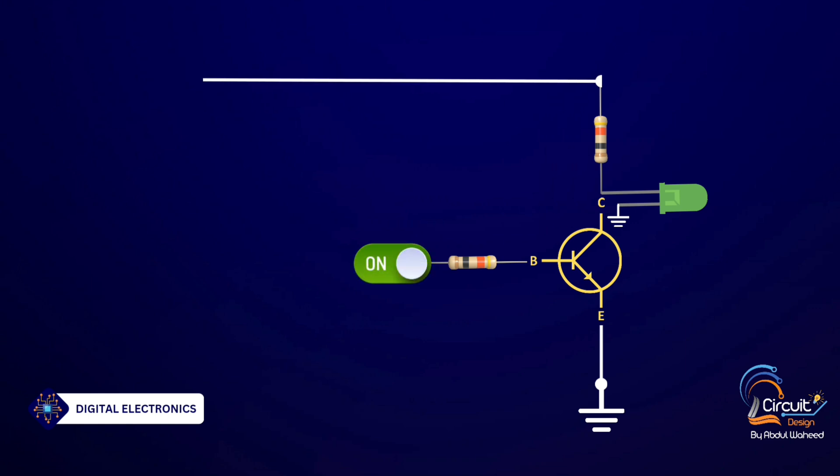Connect a positive lead to the resistor which is connected to the collector of the transistor and connect the second end of the switch to the positive lead as shown in animation.